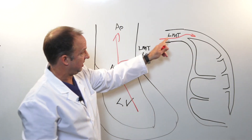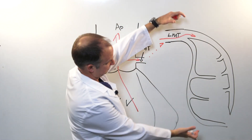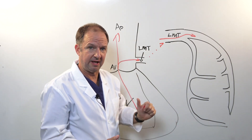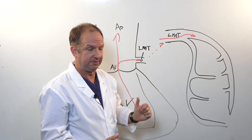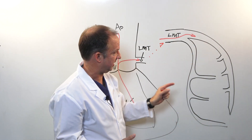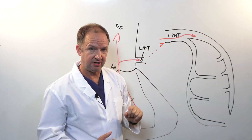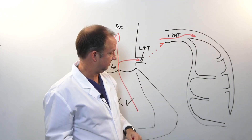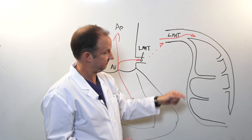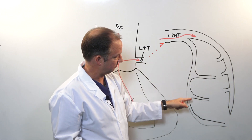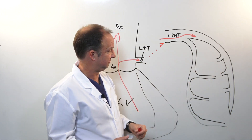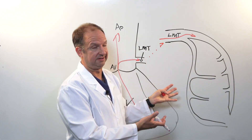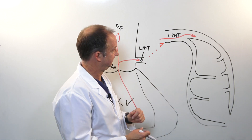Blood goes down the left main trunk into this big vessel here — the left coronary artery, which has two branches: the left anterior descending and the circumflex. Each one of those arteries has branches, which is the reason we call it the coronary artery tree.